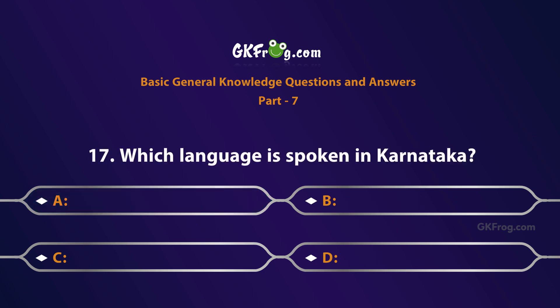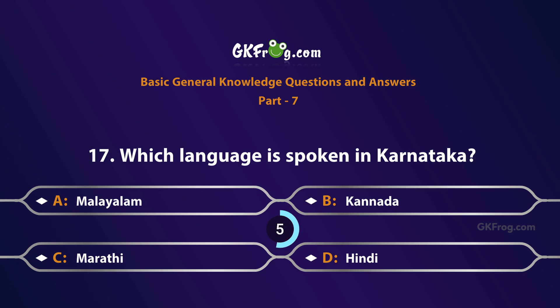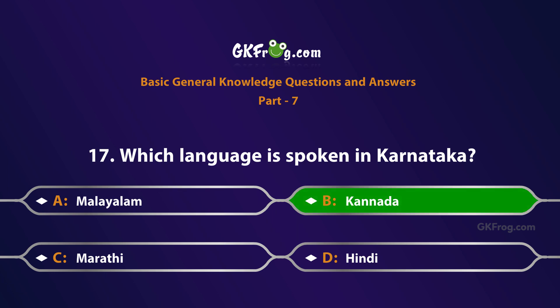Which language is spoken in Karnataka? A. Malayalam, B. Kannada, C. Marathi, D. Hindi. Correct answer is B. Kannada.